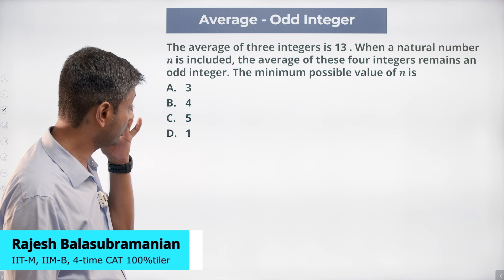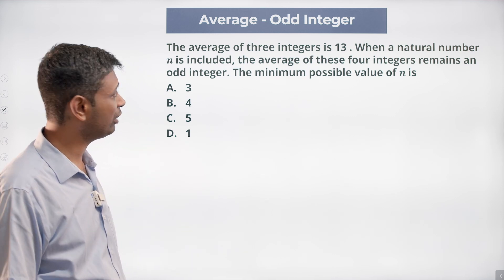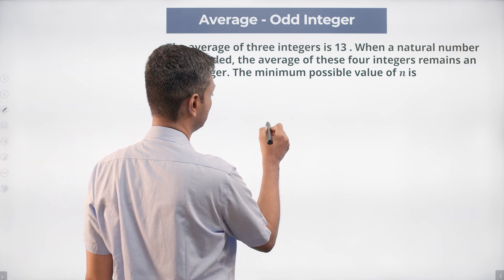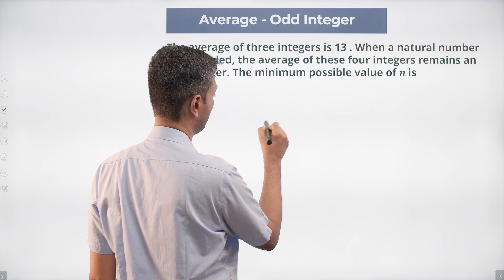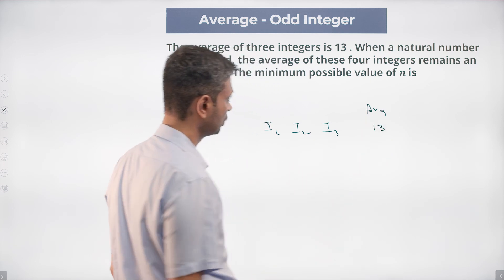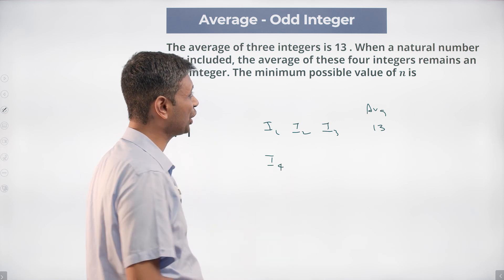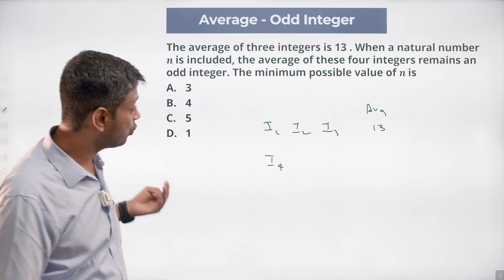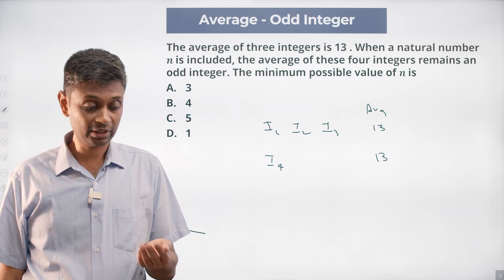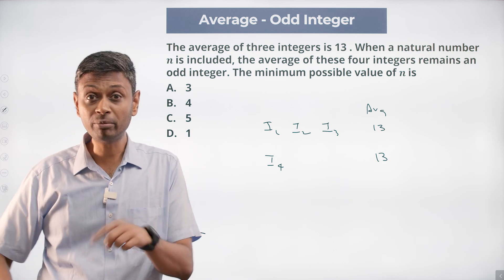The average of three integers is 13. When a natural number n is included, the average of these four integers remains an odd integer. Say I1, I2, I3 have average 13. If the fourth number is 13, the average stays 13. If it's more than 13, the average increases; if less, it decreases — but it must remain an integer.